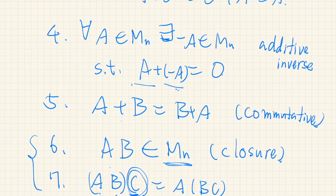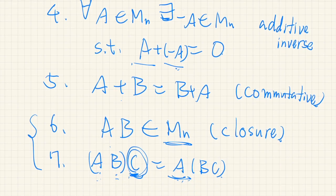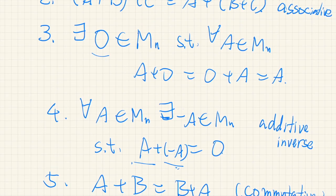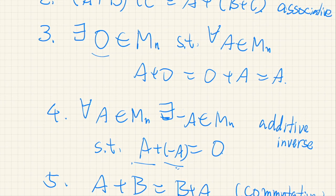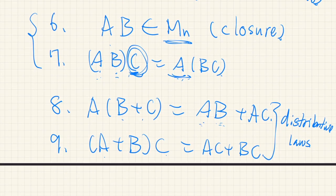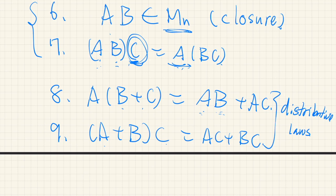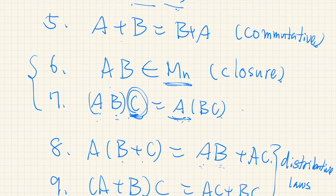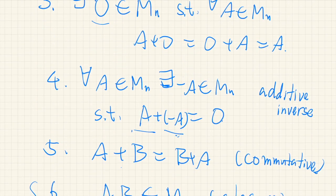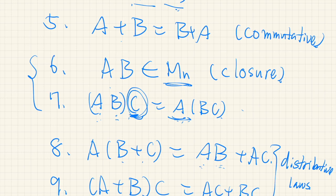So we have these nine properties satisfied by matrix algebra. This set of rules looks pretty similar to the axioms of a field — but this is different from a field. For example, we do not have the commutative law for multiplication, and we do not have the existence of multiplicative inverses — there is no division defined here. We have additive inverses, but no multiplicative inverses. That is a huge difference.